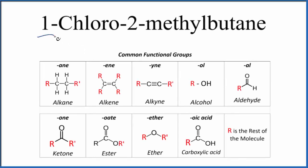Let's write the structural formula for 1-chloro-2-methylbutane. So the first thing we'll note, we have 1-chloro-2-methylbutane. It ends in A-N-E. That means we're going to have an alkane. And with alkanes, we have all carbons and hydrogens and all single bonds.